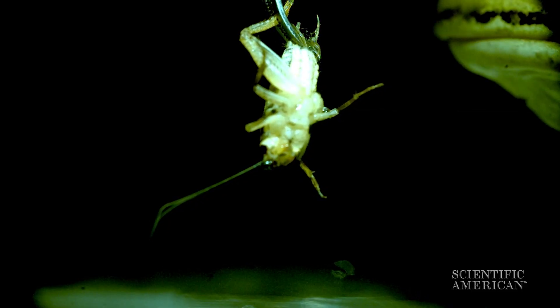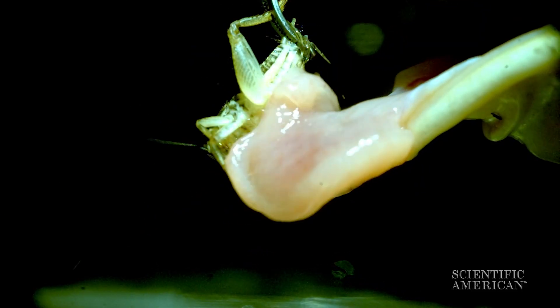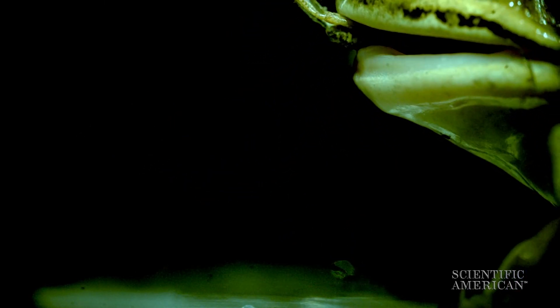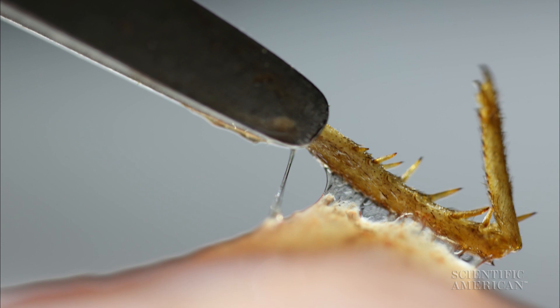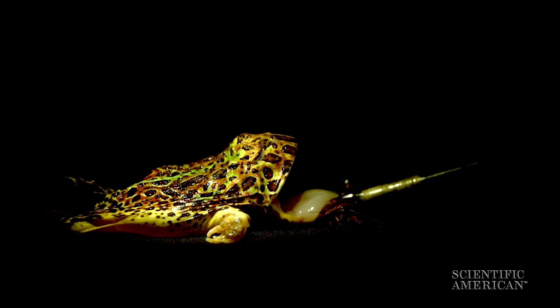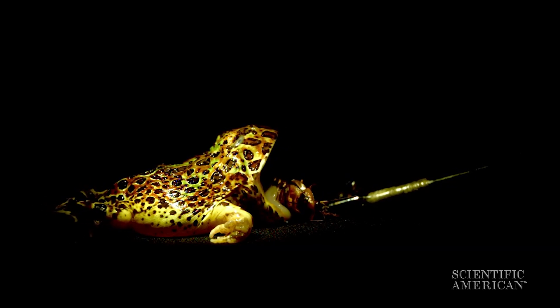The force of hitting the insect makes the spit splash up around the bug, and it is able to penetrate all the tiny cracks and crevices within the insect, increasing its contact area. After that impact, the spit thickens again, trapping the insect in the goo.